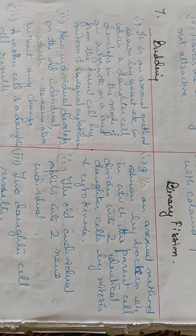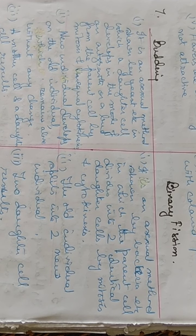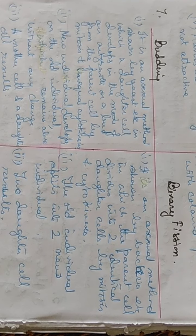Budding is an asexual method of reproduction shown generally by yeast and other organisms, where daughter cells develop in the form of an outgrowth or bud from the parent cell by mitosis and unequal cytokinesis. Whereas in binary fission, also an asexual method shown generally by bacteria, the parent cell divides into two identical daughter cells by mitosis and cytokinesis.